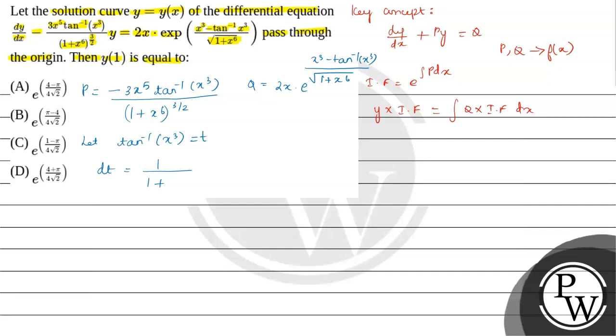Here x is replaced by x³, so x³ squared is x⁶. If we differentiate x³, we get 3x² dx.